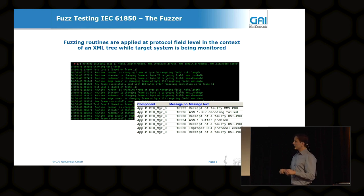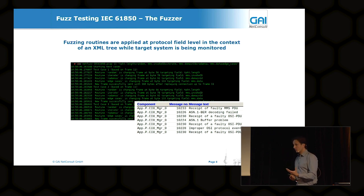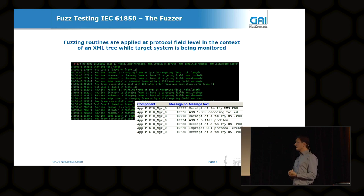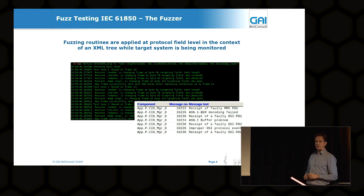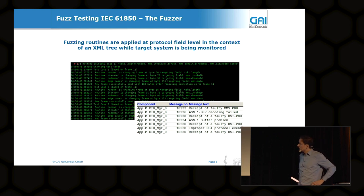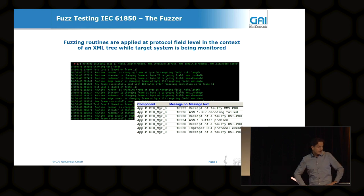While fuzzing is running, since we don't have access to the operating system itself, we closely monitor the system mainly through error and event messages from web-based management interfaces and similar tools — whatever the device provides — while the fuzzing is running.